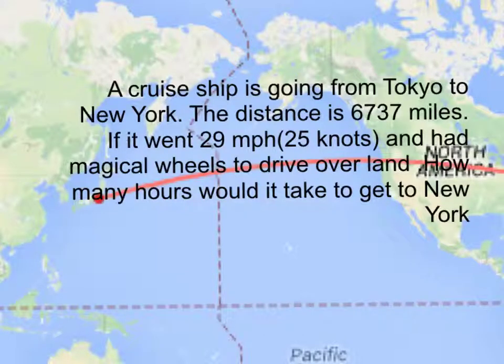A cruise ship is going from Tokyo to New York. The distance is 6,737 miles. If it went at 29 miles per hour, which is 25 knots, and had a magical wheel to drive overland, how many hours would it take to get to New York?